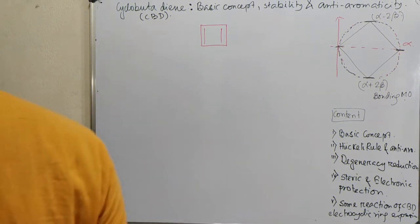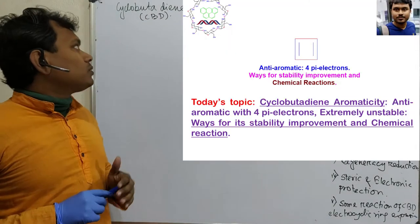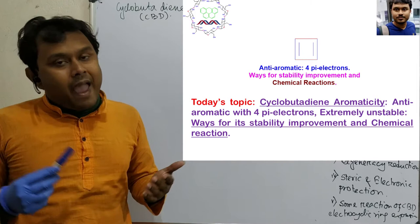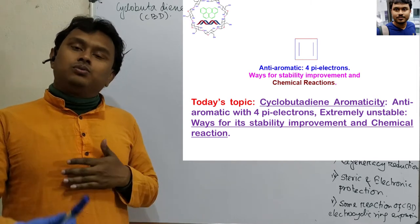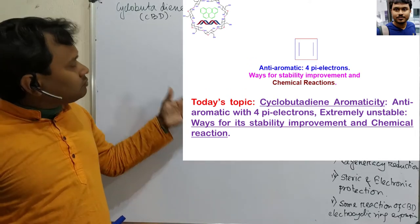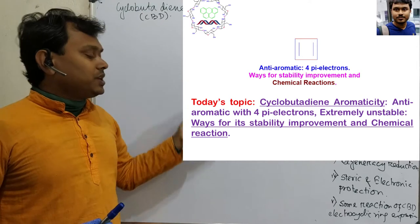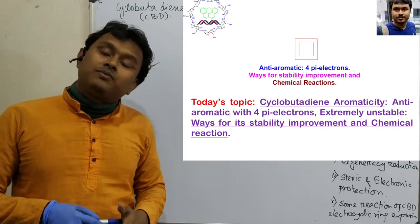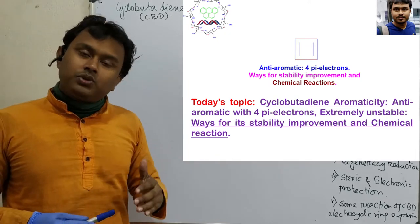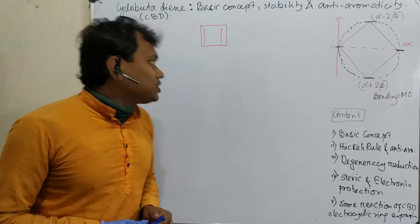Hello, welcome students. Today we are going to learn about the important topic: cyclobutadiene. We are going to discuss anti-aromaticity, unstabilization, how to stabilize this molecule, degeneracy reduction, steric and electronic protection since it's unstable, and some reactions where you can find electrocyclic ring expansion to get stable molecules. Next topic will be charged cyclobutadiene.